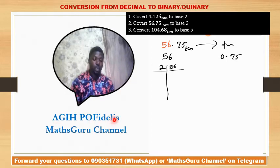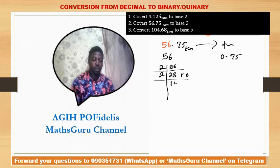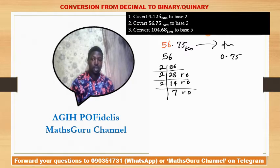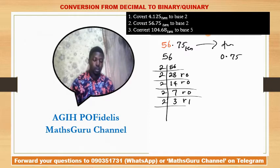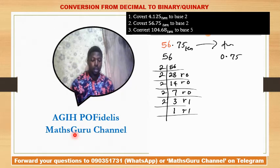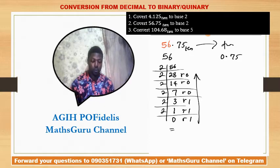Converting 56 to base 2: 2 into 56 gives 28 remainder 0; 2 into 28 gives 14 remainder 0; 2 into 14 gives 7 remainder 0; 2 into 7 gives 3 remainder 1; 2 into 3 gives 1 remainder 1; 2 into 1 gives 0 remainder 1. Reading upward gives 111000 in base 2.